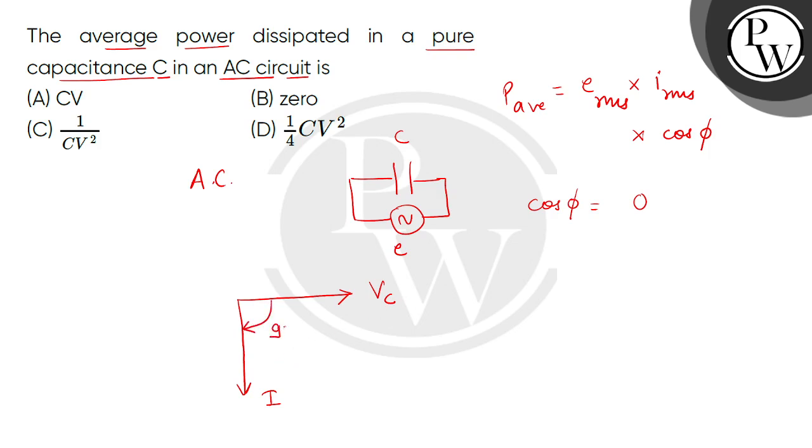the phase angle. The current leads the voltage by 90 degrees. So φ equals 90 degrees, and cos φ equals cos 90 degrees, which is zero.